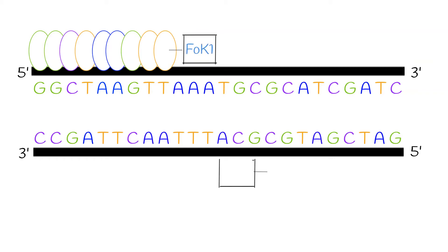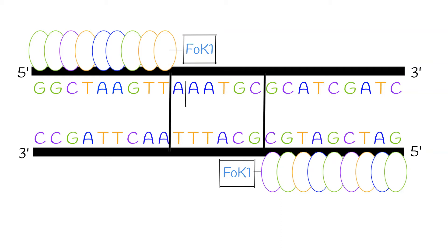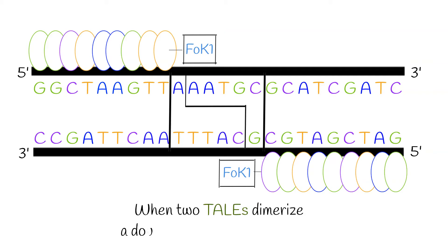The second domain of the FokI nuclease is fused to another stretch of the TALE effector repeats that bind to the second half site on the DNA. When TALE and TALEN genes are expressed in an organism, two FokI subunits dimerize, forming a functional enzyme that has staggered cuts between the six nucleotides leaving sticky ends. Because the two TALEs dimerize, a double-stranded break in the DNA is created.